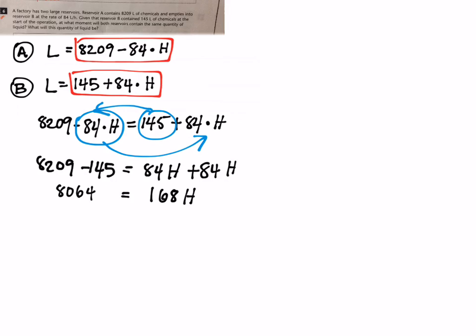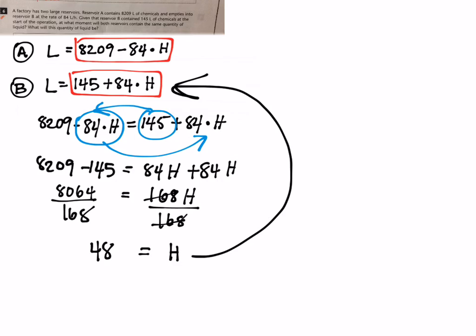Using algebra I move things around to solve for H and so I get 8,209 minus 145 equals 84H plus 84H. I made sure that the signs changed when I brought things over. This leaves me with 8,064 equals 168 times H. To get H all by itself I divide both sides by 168. This gives me that H is 48.